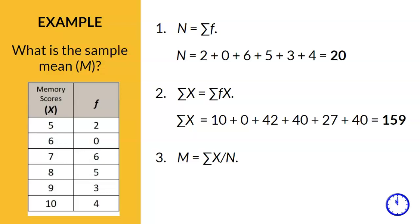Step 3 is time to calculate the sample mean by plugging in the N and the sum of X into the formula to get 7.95.